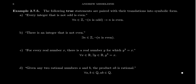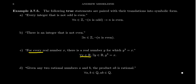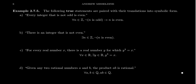A third example: for every real number x, there is a real number y for which y³ = x — a true statement with two quantifiers. We write ∀x ∈ ℝ, and then the comma gives us the next quantifier: ∃y ∈ ℝ such that y³ = x. The equation is already in symbolic form, so nothing more needs to be said about that part.